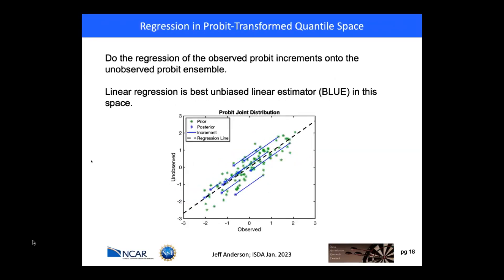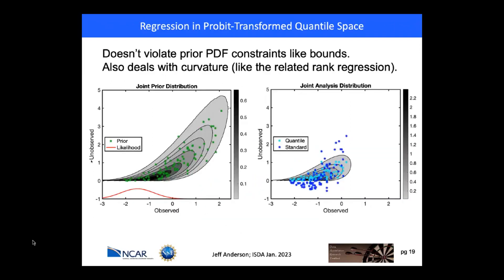Applying that probit transform to the example, both marginals are now normal, so doing linear regression is the best unbiased linear estimator. The right panel shows in dark blue the standard regression and in cyan a regression done in this transformed space with increments transformed back. By construction the cyan ensemble obeys the bounds — none are negative. In addition, it does better at representing the curvature in the posterior, and you can show that this exactly recovers the posterior in this case.